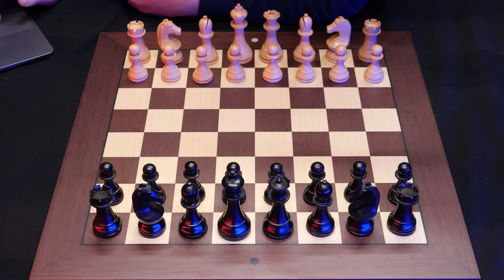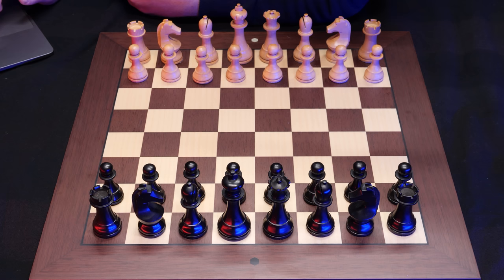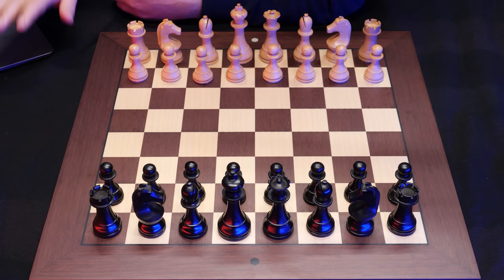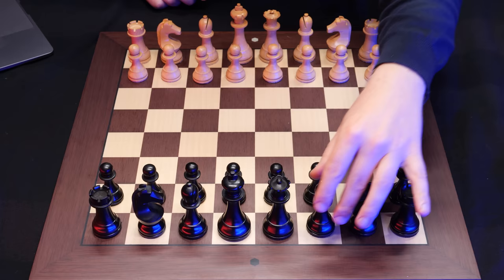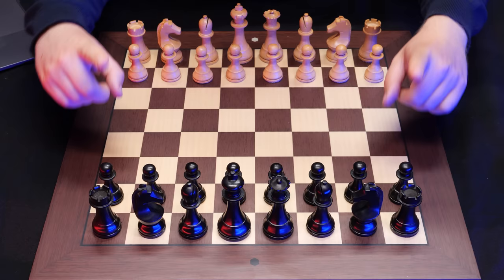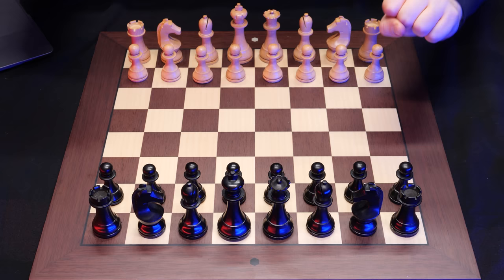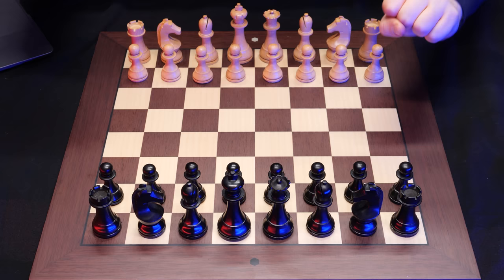The first game is by Gioachino Greco versus an unknown opponent. This game is nine moves long. I have the computer here. I have not studied these games or run them through the computer. I am just dipping my toe in the King's Gambit, studying the history and the earliest games. I invite you, my friend, to enjoy the journey with me.